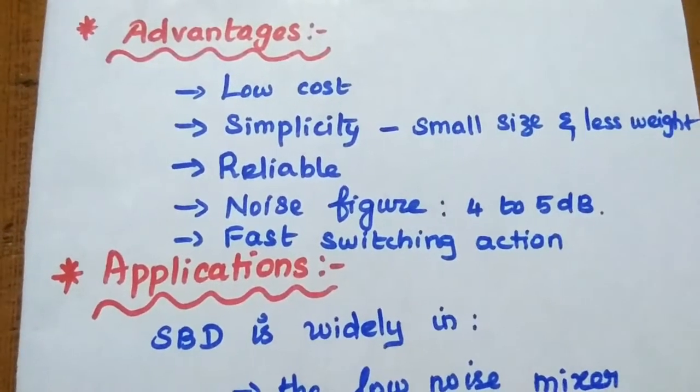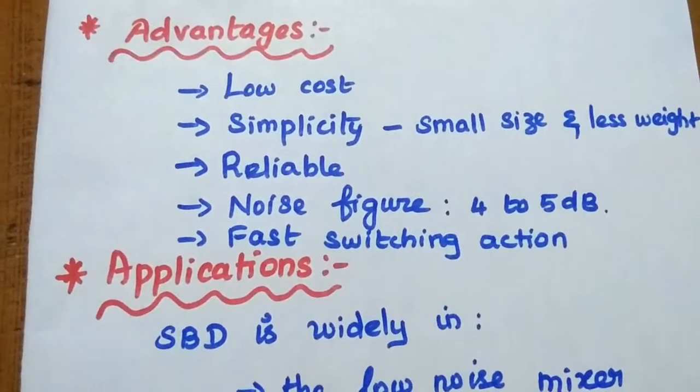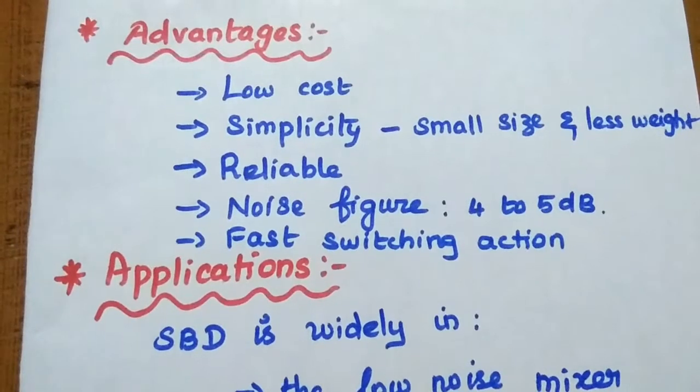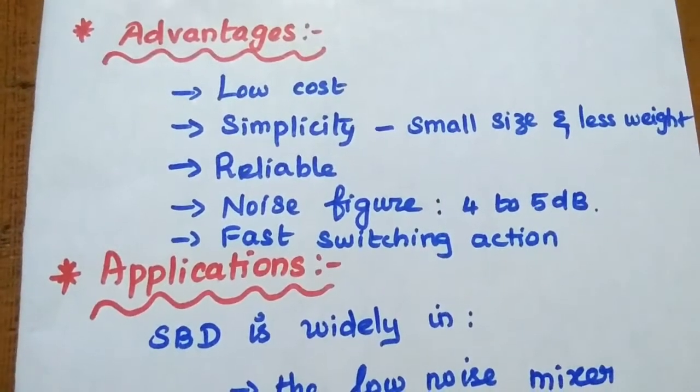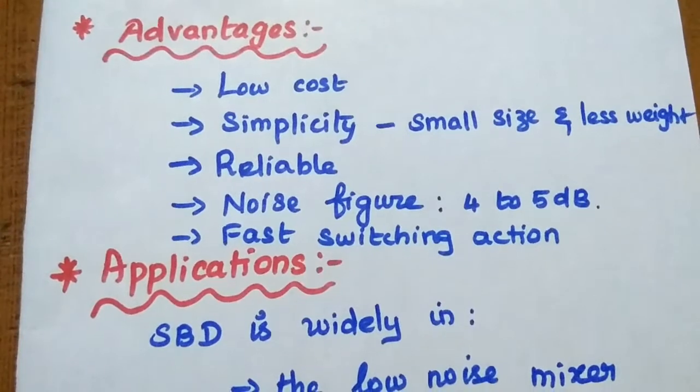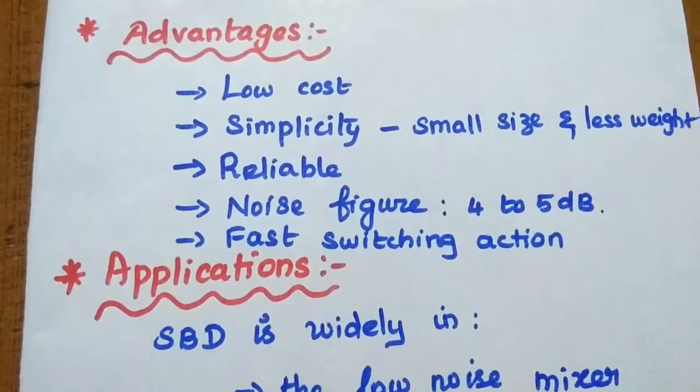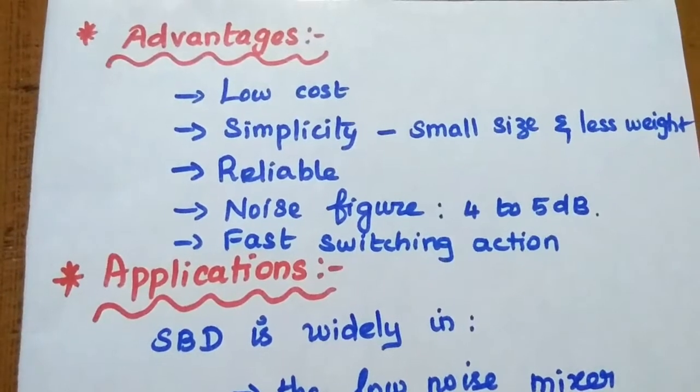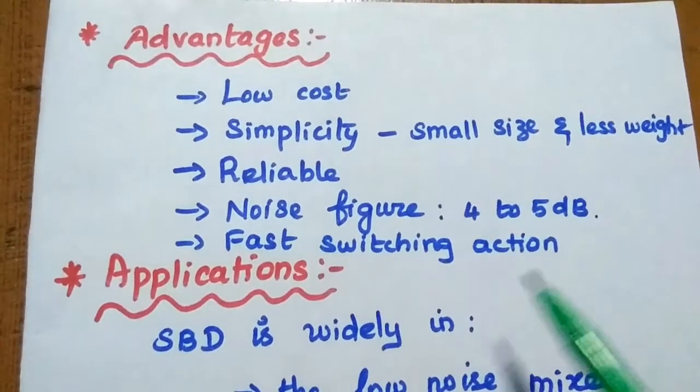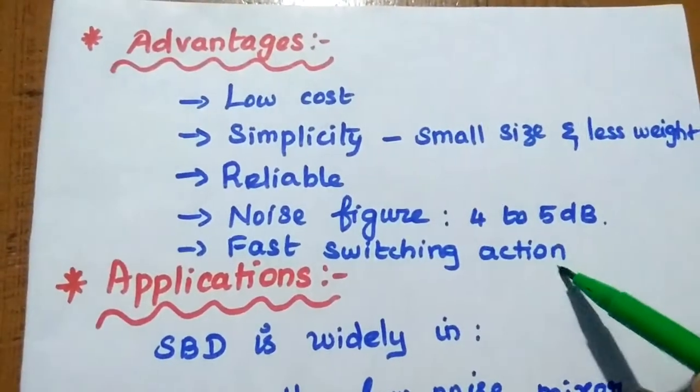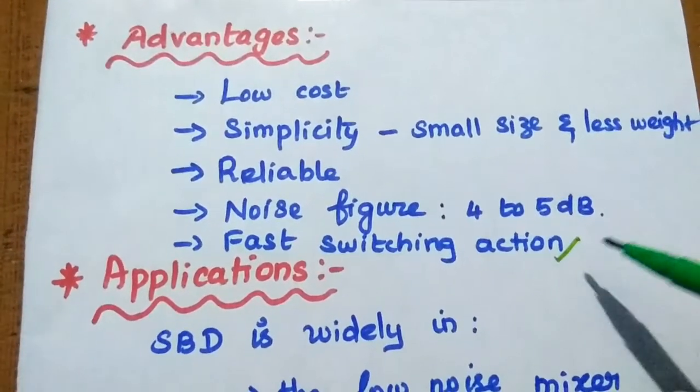Advantages of Schottky barrier diode. It is very low cost. It is very simple. Simplicity means small in size and less weight. It is highly reliable. Noise figure is in the range of 4 to 5 dB. One more advantage is fast switching action.